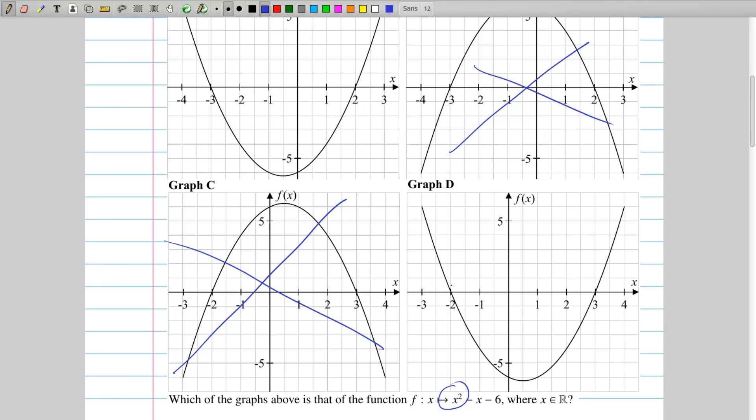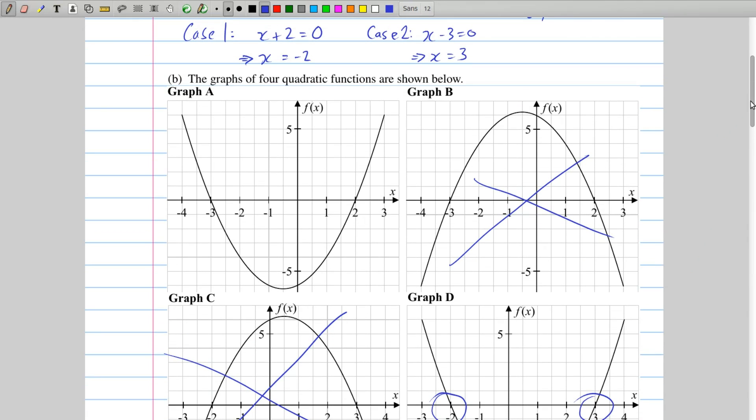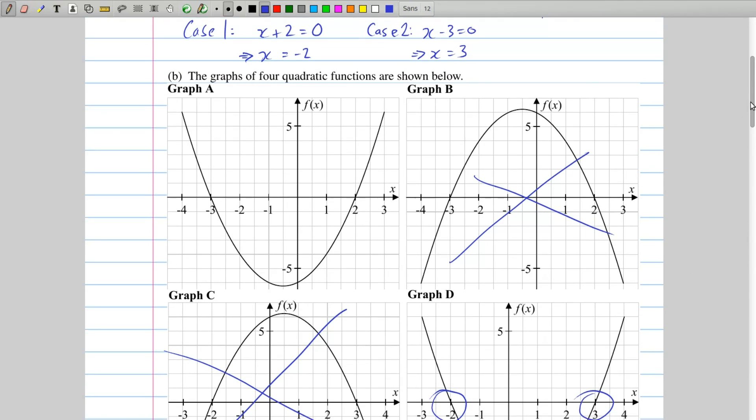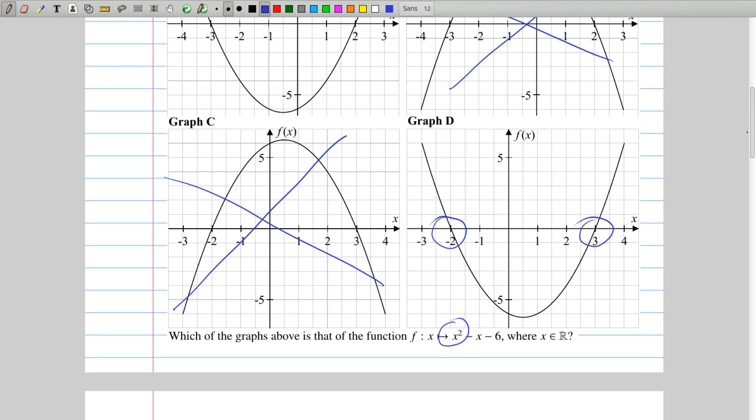So between graph a and d, which is that? Well, graph d is crossing at minus 2 and plus 3. And those are the answers we had for part a, minus 2 and plus 3. And so graph d is the only option left.